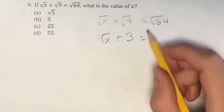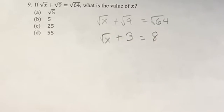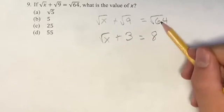And what is the square root of 64? 8. Because 3 squared is 9, and 8 squared is 64.